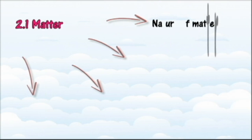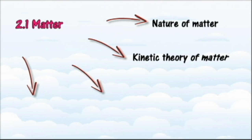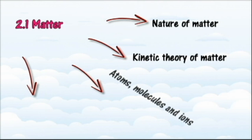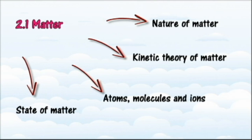At the end of section 2.1 you should be able to: describe the particular nature of matter, state the kinetic theory of matter, define atoms, molecules and ions, relate the change in state of matter to the change in heat, relate the change in heat to the change in kinetic energy of particles, and explain the interconversion of states of matter in terms of kinetic theory.